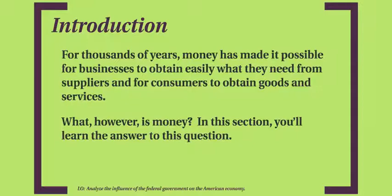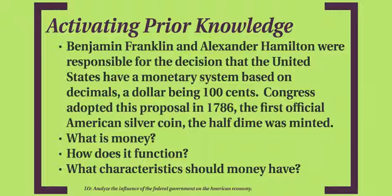For thousands of years, money has made it possible for businesses to obtain easily what they need from suppliers and for consumers to obtain goods and services. Benjamin Franklin and Alexander Hamilton were responsible for the decision that the United States have a monetary system based on decimals, where a dollar equals 100 cents. Congress adopted this proposal in 1786. The first official American silver coin, the half-dime, was minted.